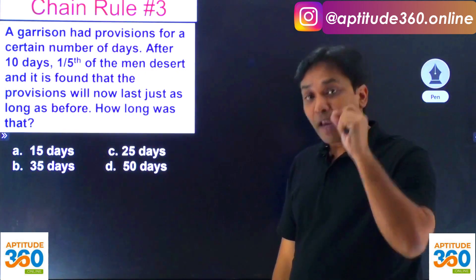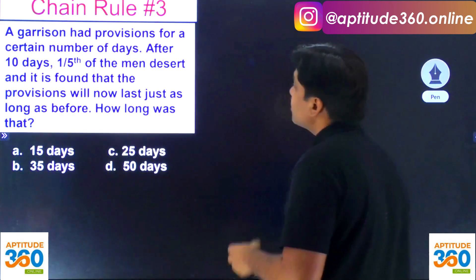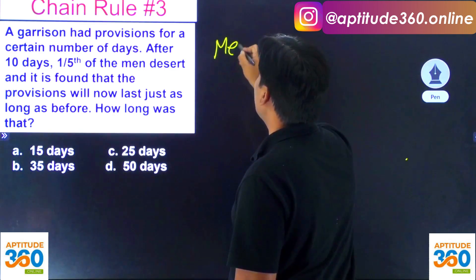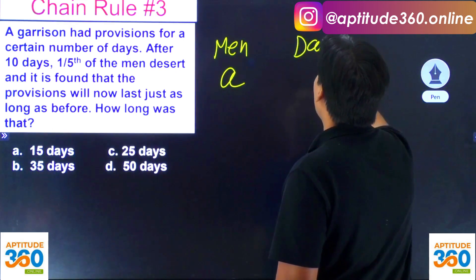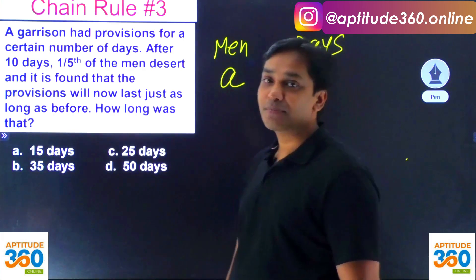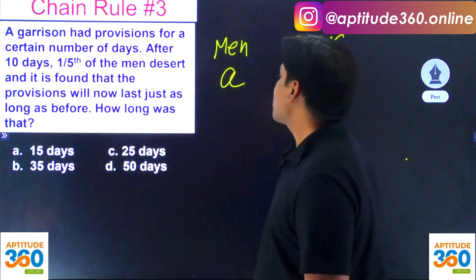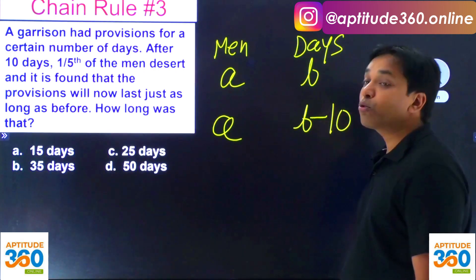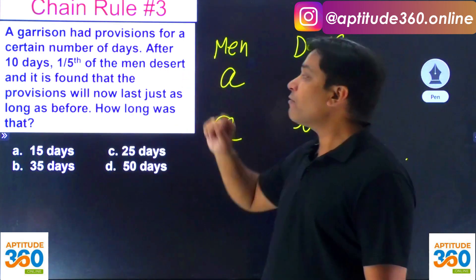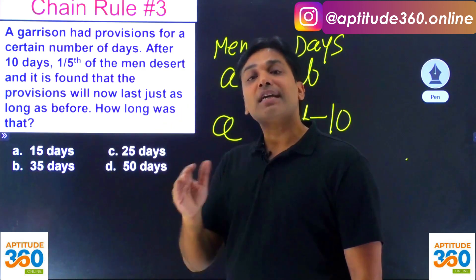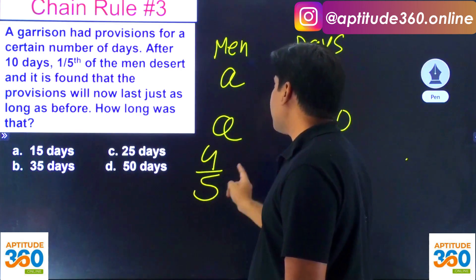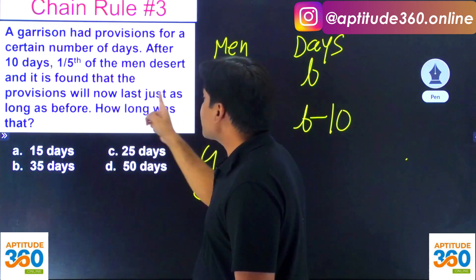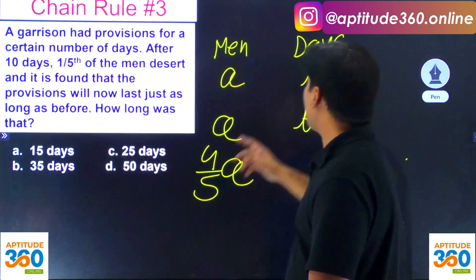This next problem is very good. A garrison had provisions for a certain number of days — let's call it b days — and they have a men. After 10 days, the food remaining is sufficient for b minus 10 days. Then one fifth of the men desert the camp, so the remaining soldiers are 4/5 × a. The problem says the provisions will now last just as long as before, meaning b days.